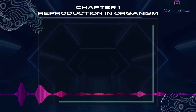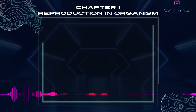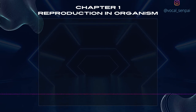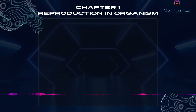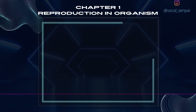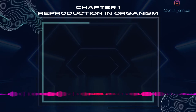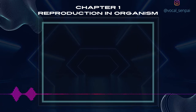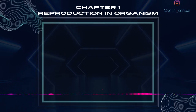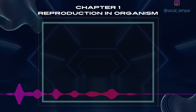In animals, the juvenile phase is followed by morphological and physiological changes prior to active reproductive behavior. The reproductive phase is also of variable duration in different organisms. Among animals, for example birds, they lay eggs only seasonally when living in nature. However, birds in captivity, as in poultry farms, can be made to lay eggs throughout the year. In this case, laying eggs is not related to reproduction but is a commercial exploitation for human welfare.